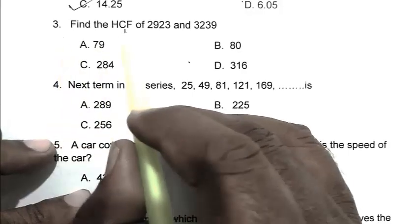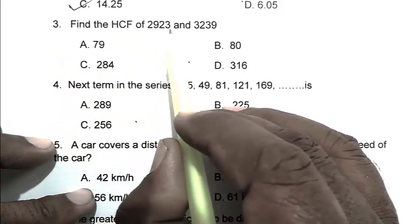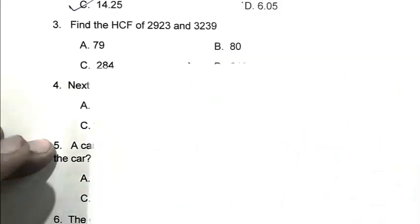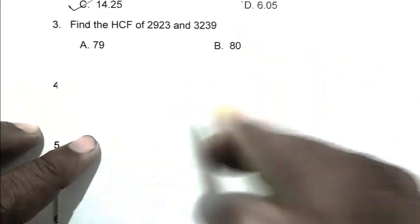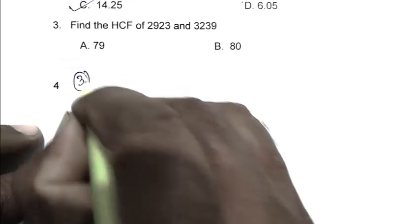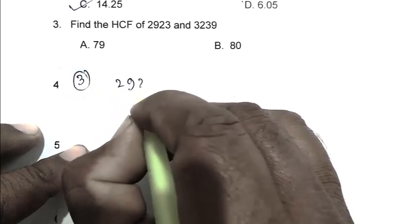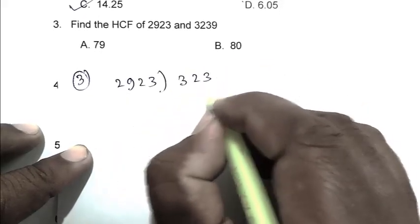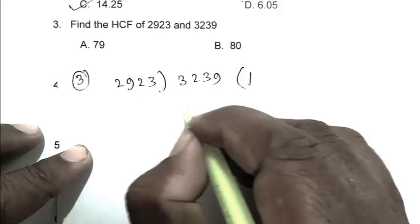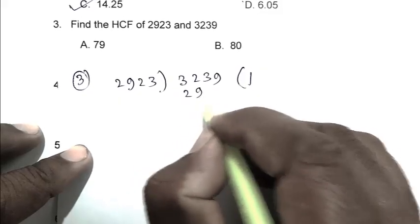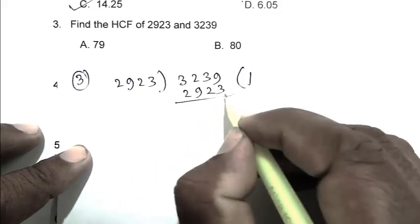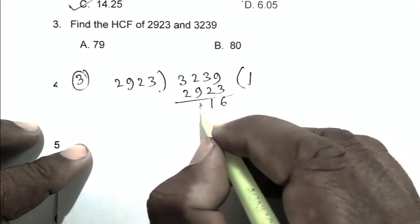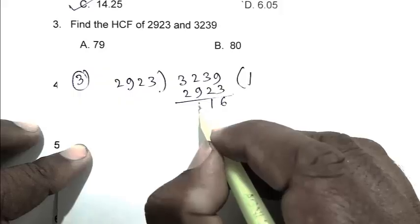Question number three: Find the HCF of 2923 and 3239. We can calculate the HCF by division method. 3239 divided by 2923. 1 times 2923 gives remainder 316.